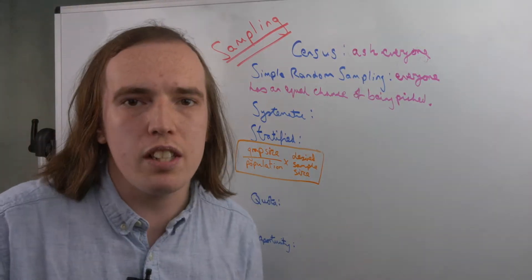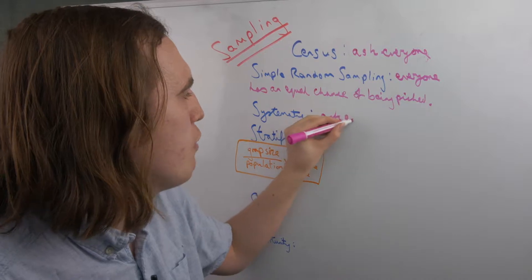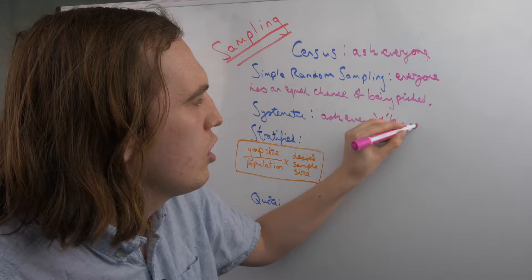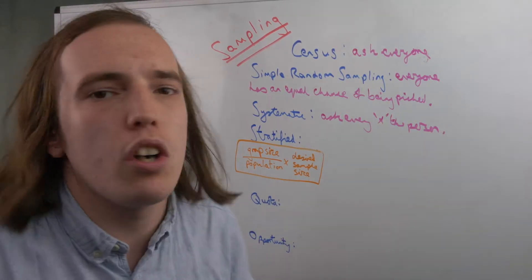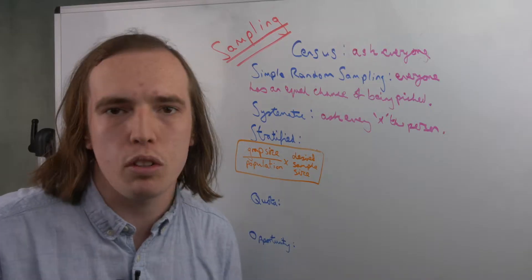The next one is systematic, and this one you would simply ask every X person. So that's to say you would ask every fifth person you come across or every eighth person you come across.